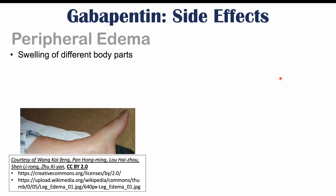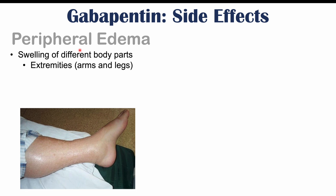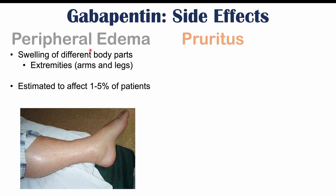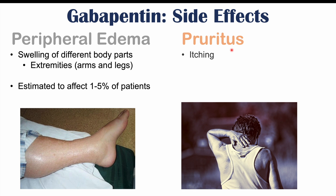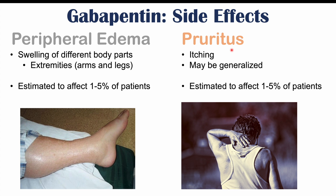Peripheral edema — swelling of different body parts, particularly the extremities like the arms and legs — occurs in 1 to 5% of patients. Pruritus, or itching sensation, may be generalized, felt in different parts of the body, and also occurs in approximately 1 to 5% of patients.